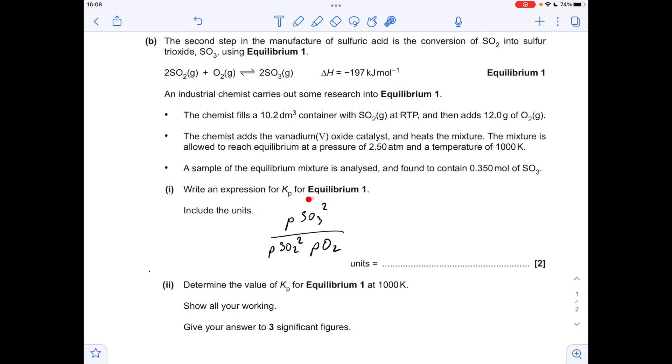Okay, so let's make a start. There's your Kp expression. In terms of units, all these partial pressures are in atmospheres. We've got squared on the top and squared on the bottom, so they'll cancel. So we're left with 1 over atm, which we would write as atm to the minus 1.